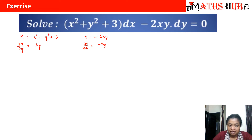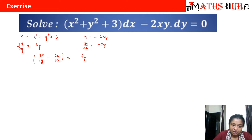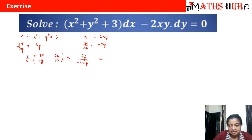We can see that ∂M/∂y is not equal to ∂N/∂x, so let's take the difference ∂M/∂y − ∂N/∂x. That becomes 2y − (−2y) = 4y. Now dividing by N, which is −2xy, we see y cancels and 4/2 simplifies, giving −2/x. So it is completely a function of x.